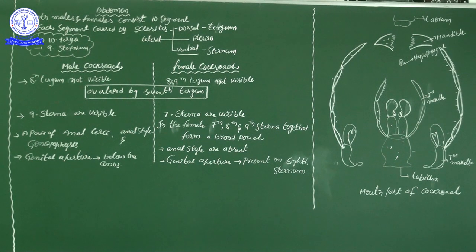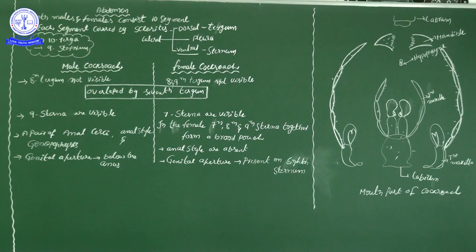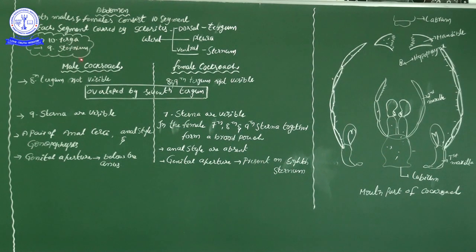In the abdomen, the dorsal plates are tergal plates and the ventral plates are sterna. There are ten segments in the abdomen, so there are ten terga. However, only nine sterna are visible because the ninth and tenth sterna fuse together to form one large sternum in the adult. So ten terga are present on the dorsal side — you should remember this.